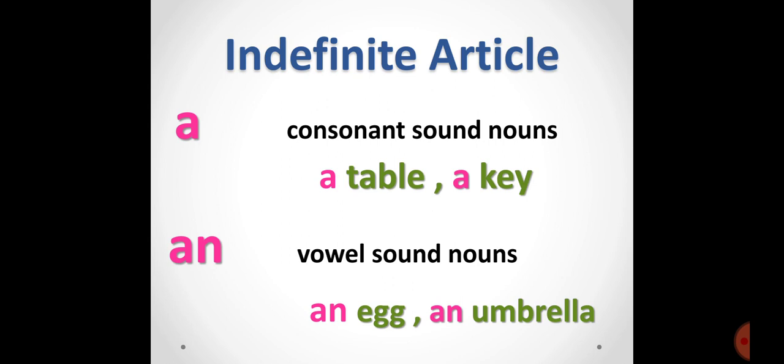'Umbrella' is a singular noun, and for singular nouns we use 'a' or 'an.' We have to decide which one to use. Remember: if any word starts with a consonant letter, we always use 'a', and if any word starts with a vowel letter, we use 'an' before that word.